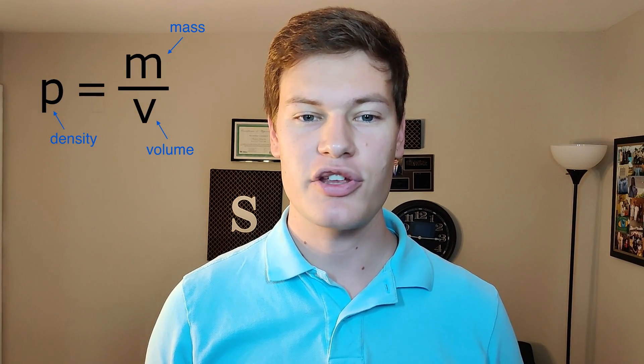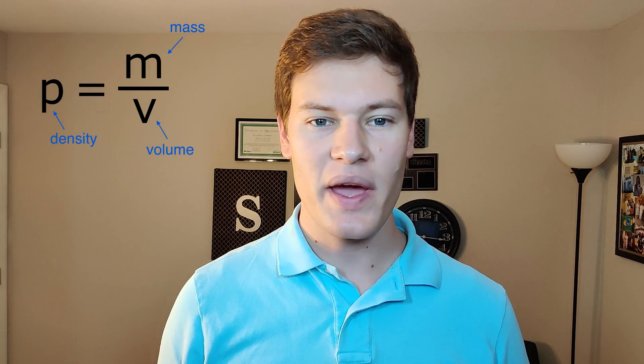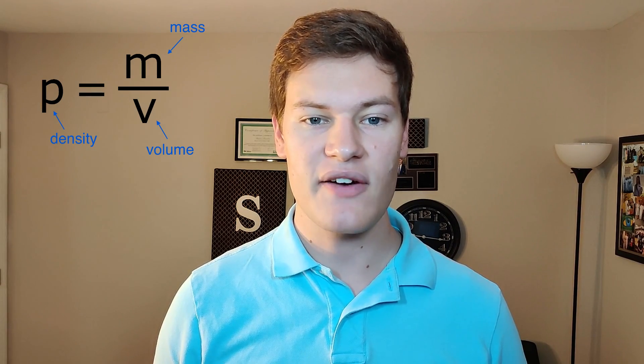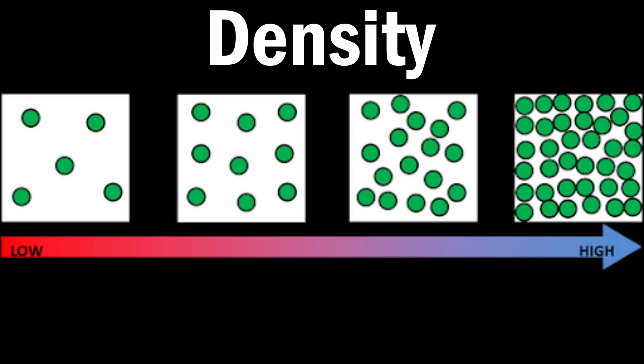In fluid mechanics, compressible flow occurs after a fluid reaches a certain velocity. When fluids such as air begin to travel fast enough, they can be compressed. In other words, the density of the fluid itself can change. Density is a measure of mass per unit volume — it's a way to measure how closely packed the particles in that fluid are. When a fluid becomes compressible, the particles are able to be pushed closer together.